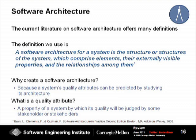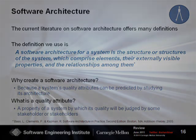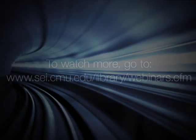Now, why do you create a software architecture? Why have we been saying for many, many years that software architecture is important? Because you can start understanding and even predicting quality attributes by studying the architecture of the system. In case you haven't heard the term quality attributes before, you can think of it as a property of a system by which quality will be judged by a stakeholder or stakeholders. Some people tend to call quality attributes non-functional requirements. However, the use of non-functional requirements doesn't ring well with me because I can't think of anything that is non-functional. But in any case, that is the term that is used by many folks in the field.